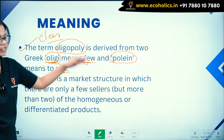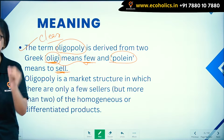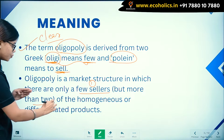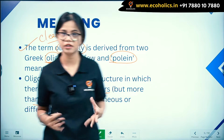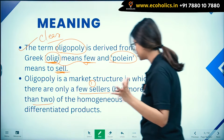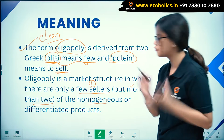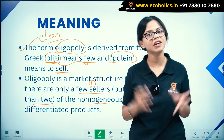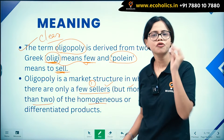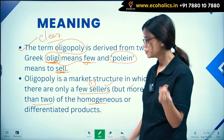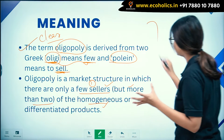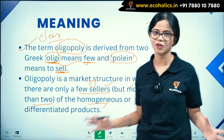Oligopoly is a market structure in which there are only few sellers — more than two. When we say few, it does not mean only two sellers; there are more than two sellers of a homogeneous or differentiated product. Oligopoly lies somewhere between monopoly and monopolistic competition.